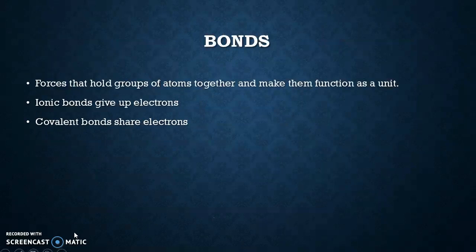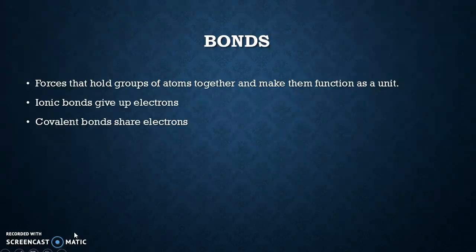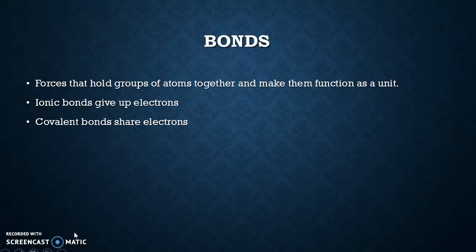Bonds are forces that hold groups of atoms together and make them function as a unit. We have ionic bonds, which involve giving up or gaining electrons, and covalent bonds, which share electrons. Covalent bonds are really the strongest bonds we have — very hard to pull apart. To break a covalent bond you'd most likely need a nuclear lab with heavy machinery, specialized equipment, and especially safety equipment, because you can have very violent reactions. There is a lot of energy stored in those bonds.